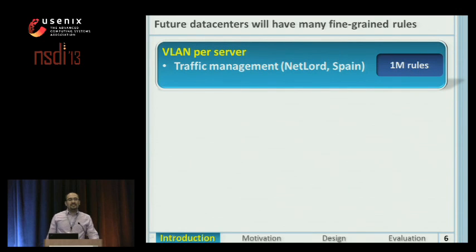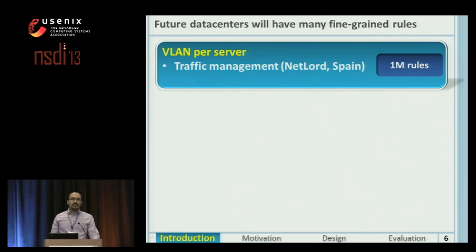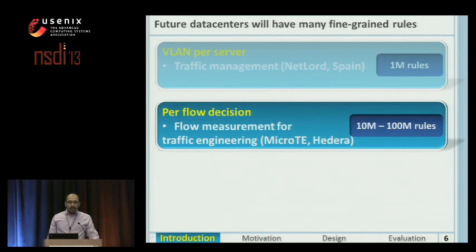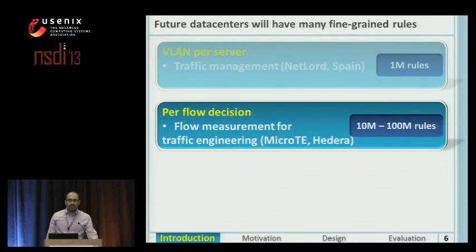A lot of research has proposed mechanisms that will result in many rules in future data centers. One body of work uses VLANs per service, for example for traffic management. Imagine a data center with 100K servers — these policies will need millions of rules. In that data center, we can easily have 100 million flows, and if we want per-flow decisions, for example for traffic engineering, the number of rules will be huge.